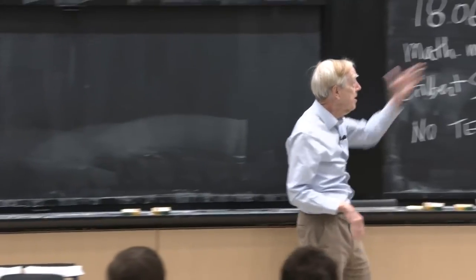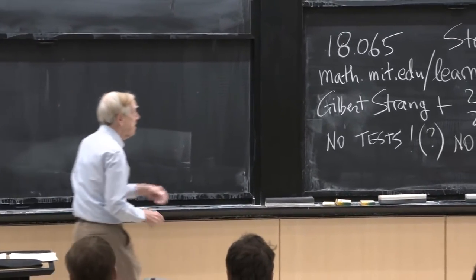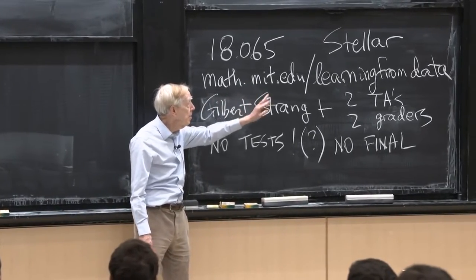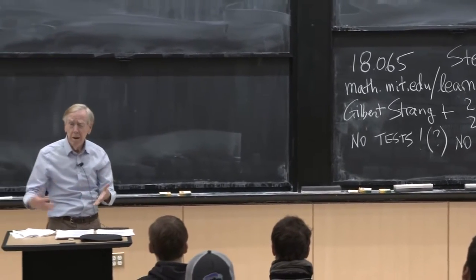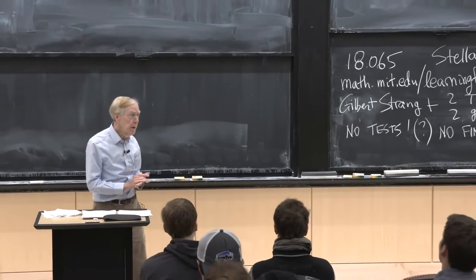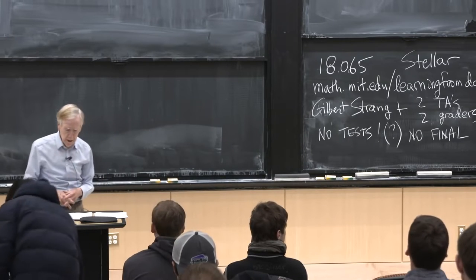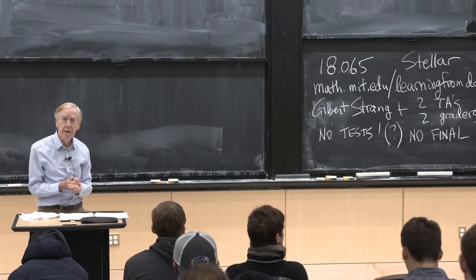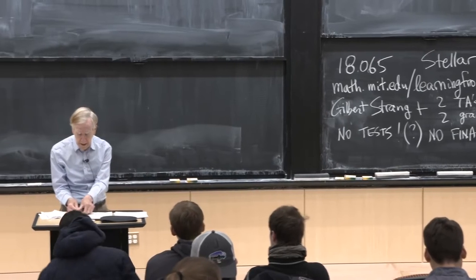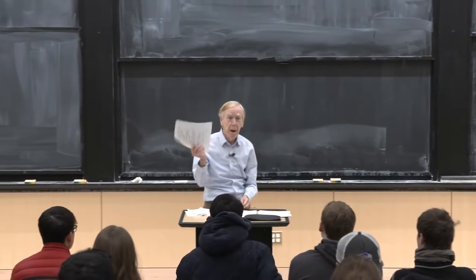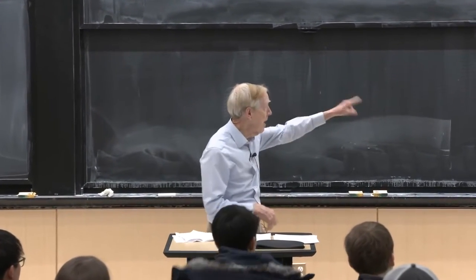There is a Stellar site established, and that will be the basic thing that we use. This is a public site, math.mit.edu, learning from data. A book is coming pretty quickly. That site has the table of contents of the book, which would give you an idea of what could be in the course. I printed out a copy for everybody of that one page — this is probably the first and last handout — with the table of contents.